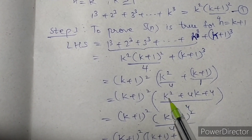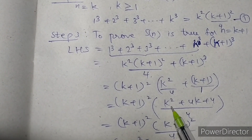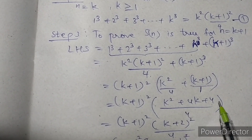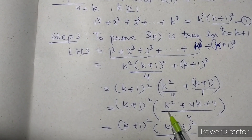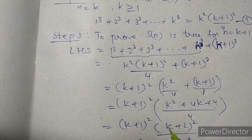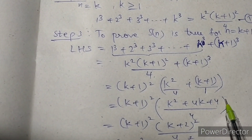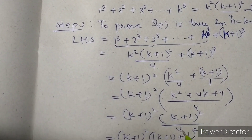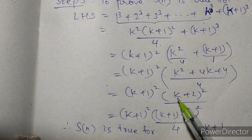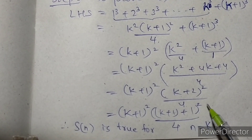Now we have (k+1)² × (k² + 4k + 4) divided by 4. The expression k² + 4k + 4 resembles the identity a² + 2ab + b², which equals (a+b)². Here a = k and b = 2, since b² = 4. So k² + 4k + 4 = (k+2)². Therefore we get (k+1)² × (k+2)² divided by 4.